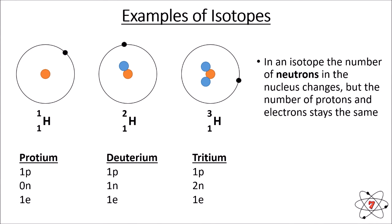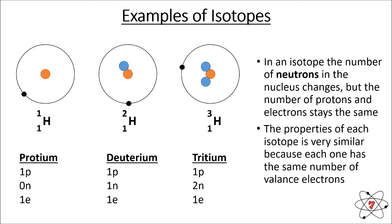This third isotope is called tritium. So these are all different isotopes of hydrogen — the number of protons and electrons never changes, only the number of neutrons. The properties of each isotope are very similar because each one has the same number of valence electrons — the same number of electrons in the outer shell. But the number of neutrons in an isotope will vary.